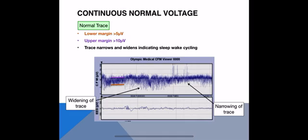Continuous normal voltage is a normal trace. We look at the amplitude of the wave pattern and can see that the lower margin is greater than 5 — depicted by the orange line — and the upper margin is greater than 10 — depicted by the purple line. The trace also narrows and widens in places, indicating sleep-wake cycling, which as we discussed is a normal and desirable finding.